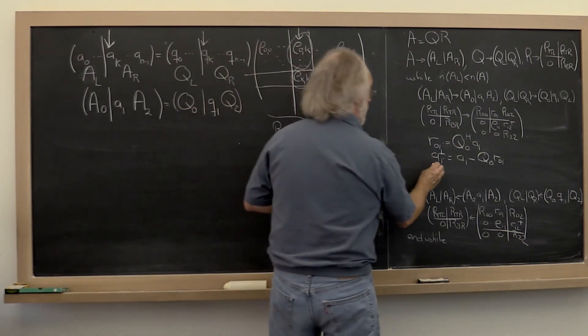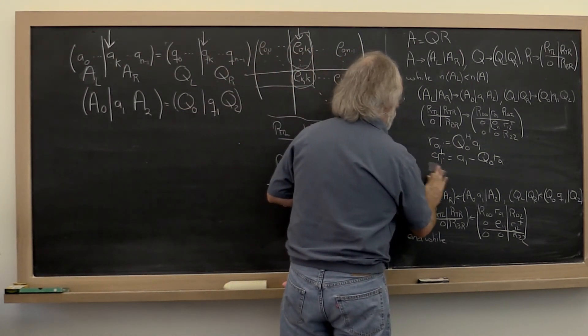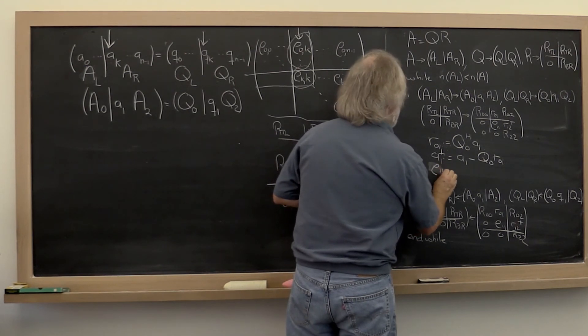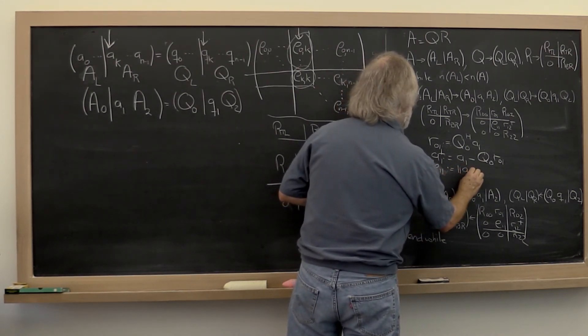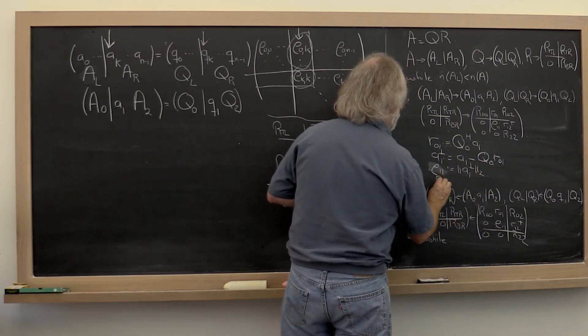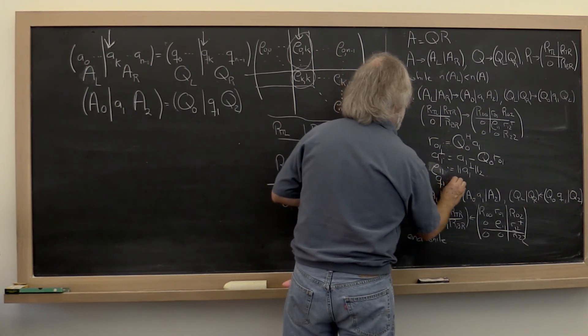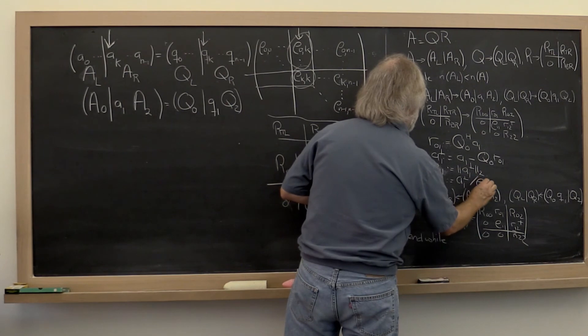Then we compute the length of that perpendicular, that orthogonal part. And then we compute Q_1 as A_1 perpendicular divided by rho.